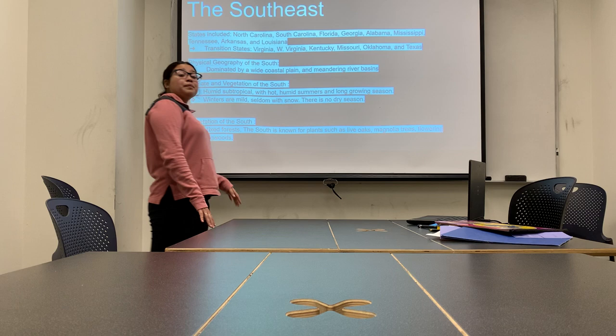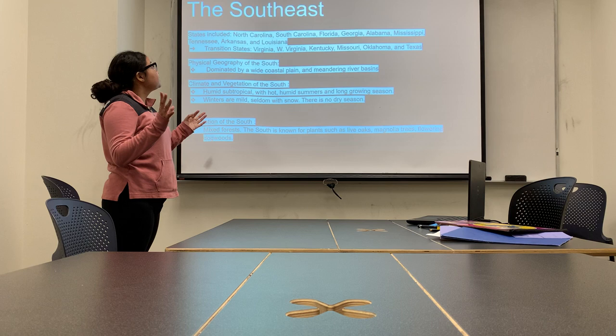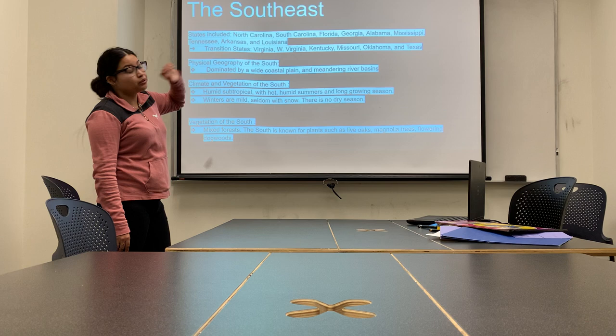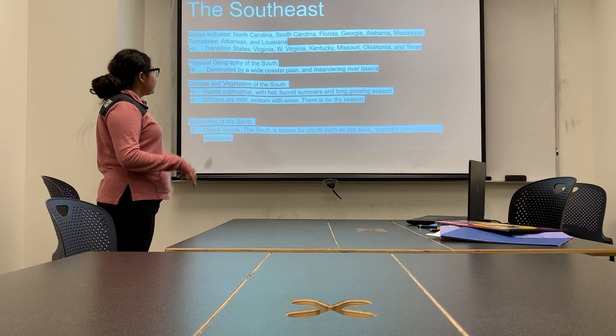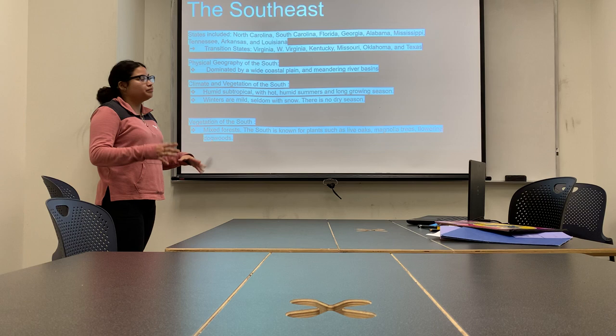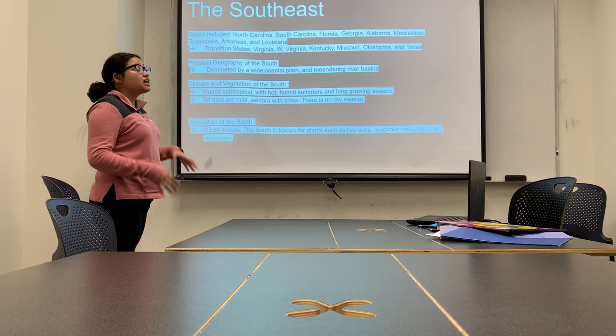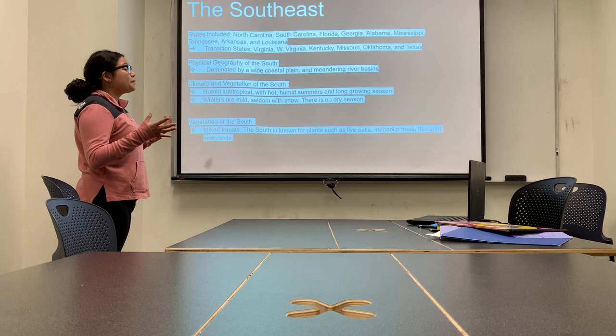Now we're going to talk about the Southeast region, which combines the Southwest and East regions together. Some states included are North Carolina, South Carolina, Florida, Georgia, Alabama, Mississippi, and Tennessee. Transition states — states that have more than one region — would be Virginia, West Virginia, Connecticut, Missouri, Oklahoma, and Texas. The physical geography of the South is dominated by wide coastal plains. The climate is humid and tropical with hot, humid summers and long rainy seasons. The vegetation is mixed forest.